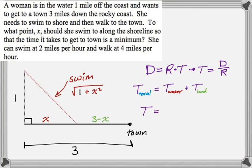It's going to be the distance that she swims—and if you look back at the problem, she can swim at 2 miles per hour, so that's going to be over 2. That's distance swimming over rate swimming plus the distance that she walks, which is going to be 3 - x, over the rate at which she can walk, which in the problem is 4 miles per hour. So we have T = √(1 + x²)/2 + (3 - x)/4.